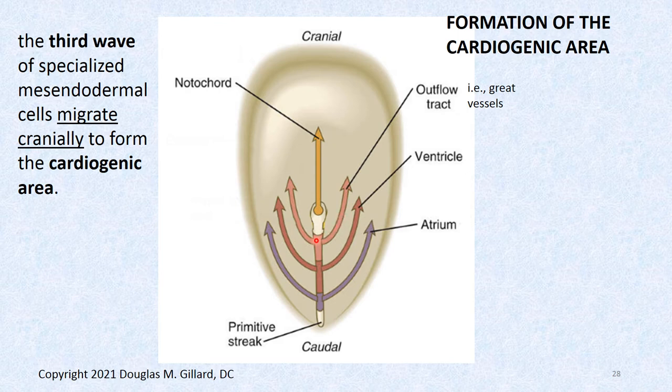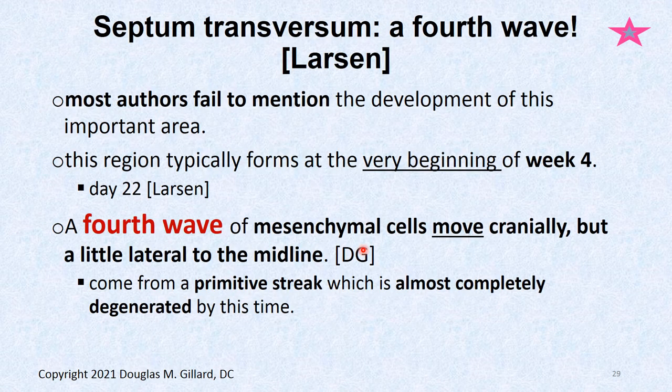We can trace the cells from the cranial end of the primitive streak — not the primitive node — to form the outflow tract, ventricles, and atria as described. Now there's a fourth wave of anterior migrators — many authors don't talk about this, but it's important because it forms the diaphragm. About day 22, a fourth wave of mesenchymal tissue moves cranially, staying a little bit lateral since it's getting busy in the middle, going above the cardiogenic area.